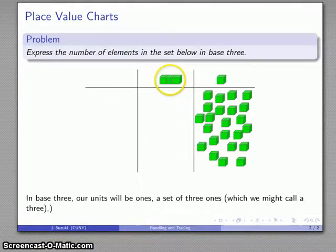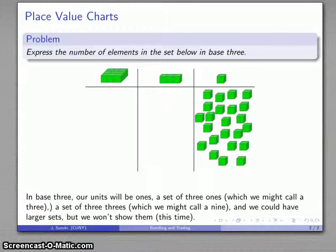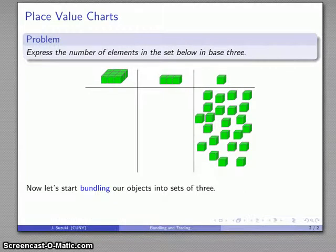Again, because I've only drawn three places, that's as far as I'm going to go, but we could have larger sets. We could take three of these, bundle them, and put a unit in our next place, but I'm not going to bother with that at this point. The next thing we're going to do is start bundling. Because I can take a set of three of these and make it one of the next thing over, I'm going to start collecting sets of three.